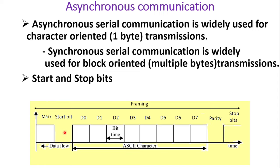When there is a need to transmit data, first a start bit (logic 0) is inserted. Then the 8-bit data is transmitted, followed by an optional parity bit. Finally, a stop bit (logic 1 or mark bit) is added. This is the entire bit pattern — start bit, eight data bits, optional parity bit, and stop bit. This is called framing of one byte of data. In total, 10 bits are transmitted for asynchronous serial communication: 1 start bit, 8 data bits, and 1 stop bit.